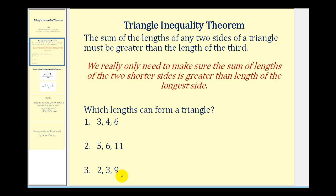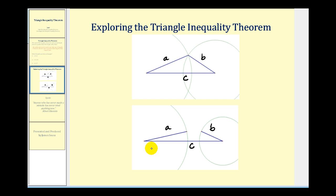So before we take a look at these questions, let's go ahead and investigate why this must be true. Here we see two diagrams, one where a triangle is possible given the lengths of the three sides and one where a triangle is not possible given the length of three segments.